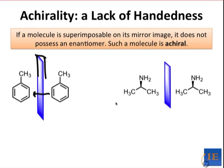To be achiral, a molecule doesn't have to be completely flat. Three-dimensional molecules can be achiral as well, and here's an example on the right. This amine is an achiral compound. When it looks at itself in a mirror, the mirror image is perfectly superimposable on the original. Thus, the two so-called enantiomers are actually one and the same molecule.